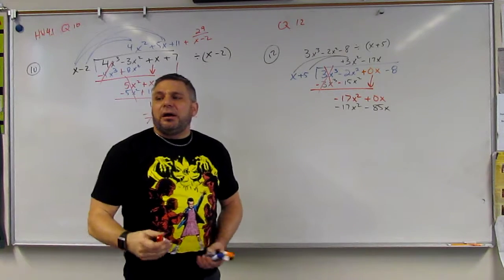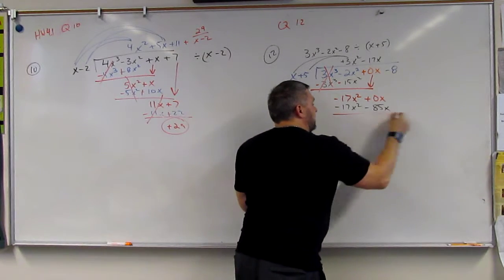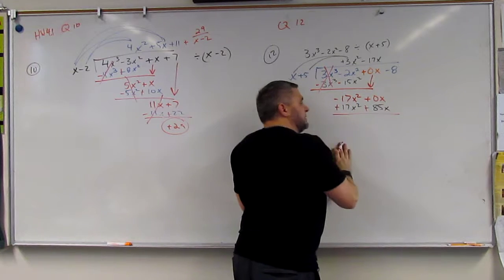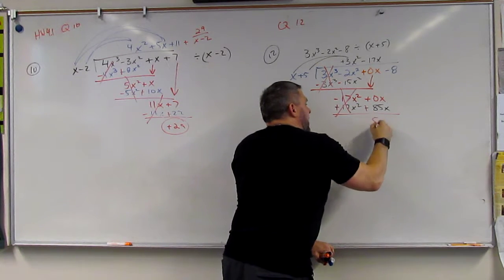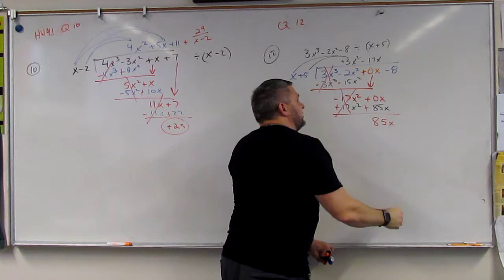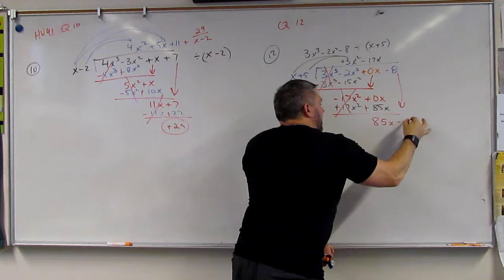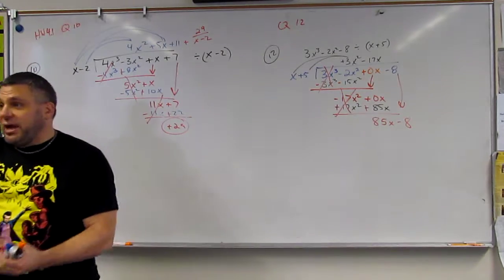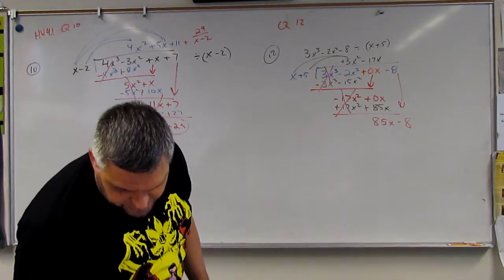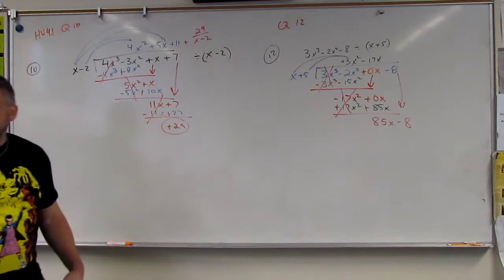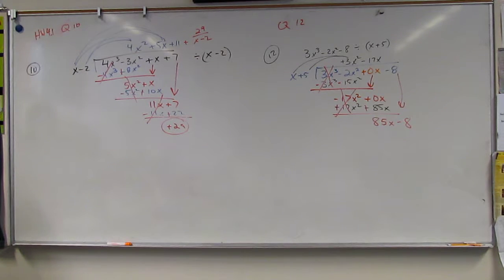And then we draw the line, change these signs so that these cancel. And now you have a positive 85x. Then you bring this down, you go minus 8. And it's a big number, and you would think, hey, I'm doing this wrong. But we're not.